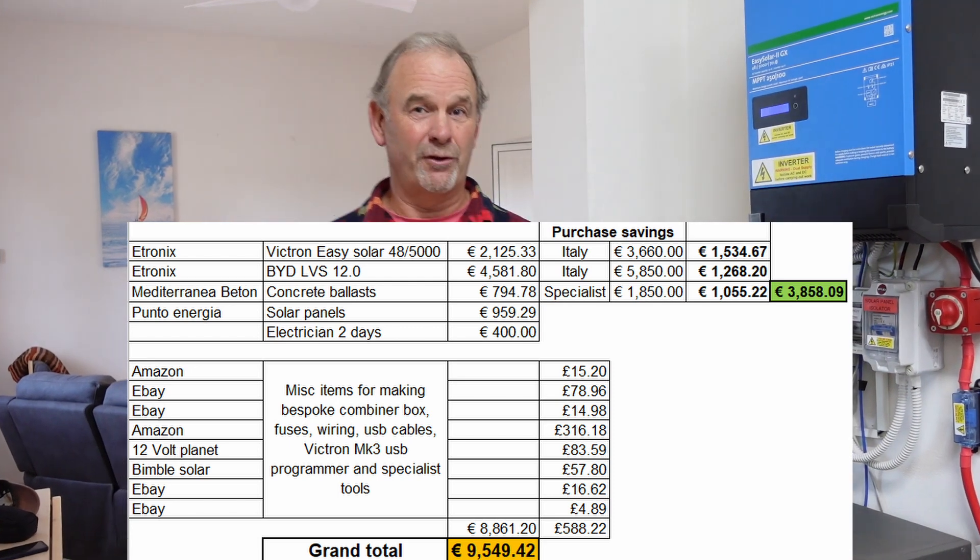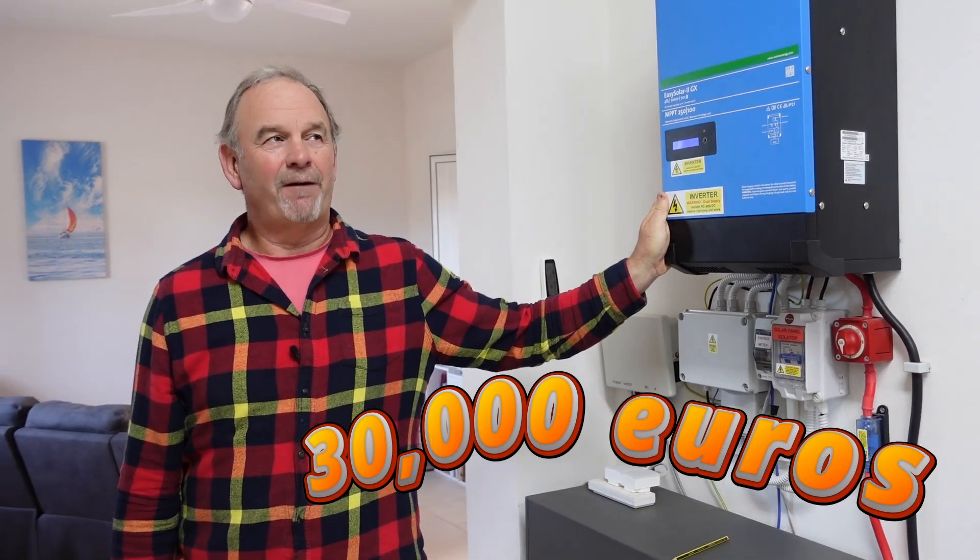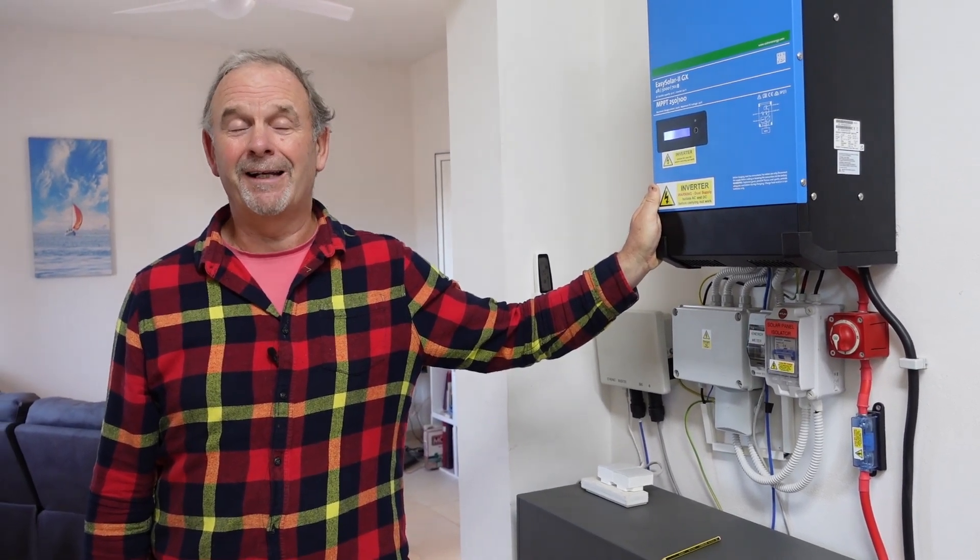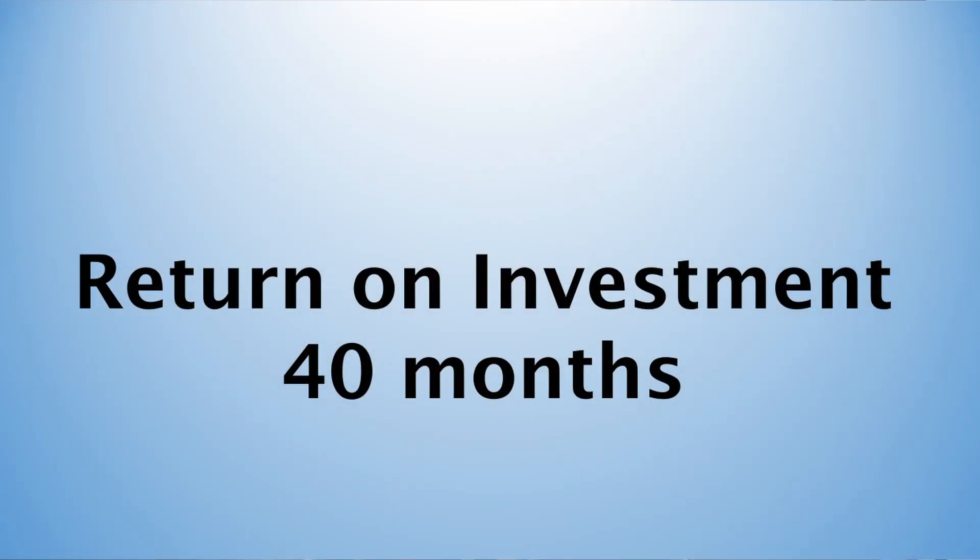The total cost of our system came to just over 9,500 euros. When I initially asked an Italian company for a quote, they quoted for a grid-tied system with less battery power and a less powerful inverter, quoting about 30,000 euros. We've saved ourselves at least 20,000 euros in costs. I've also worked out that our return on investment for this whole system is 40 months—we're already three months in, so 37 months to go.